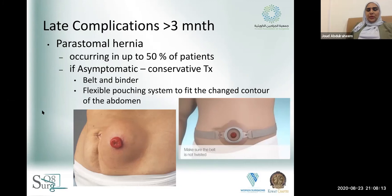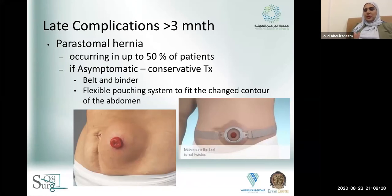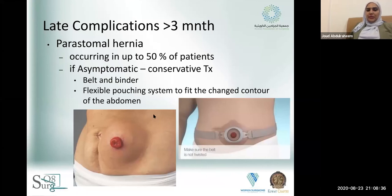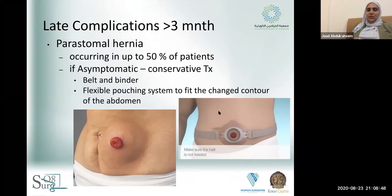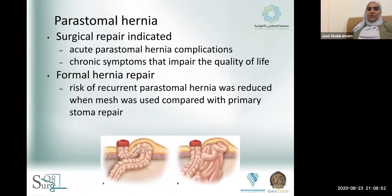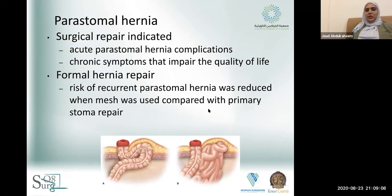One of the most important complications — and one we can fix surgically — is a parastomal hernia, occurring in up to 50% of patients. If the patient sees a bulge but it's not affecting their life and they can still apply the appliance without obstruction, the first step is conservative: use a binder to push the hernia inside, or use a flexible one-piece system that fits to the body contour. If the patient presents acutely with obstruction, the hernia is too large, or it interferes with appliance fit or quality of life, a formal hernia repair is needed.